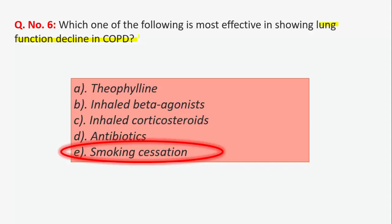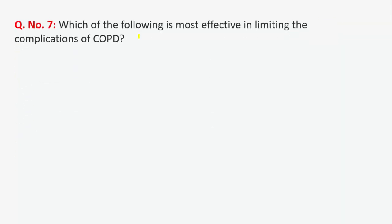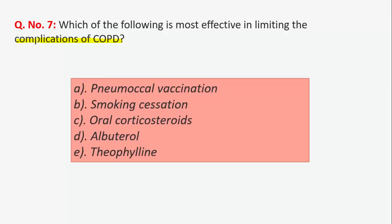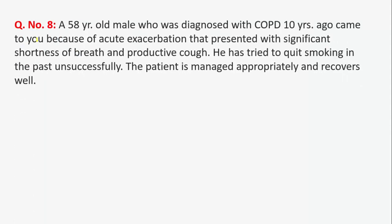Question 7: which of the following is most effective in limiting the complications of COPD? Again, the answer is smoking cessation. The thing that stops the decline of lung function and limits the complications of COPD is smoking cessation.